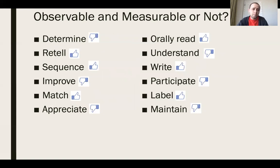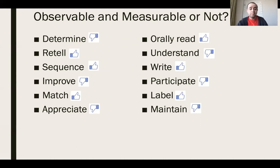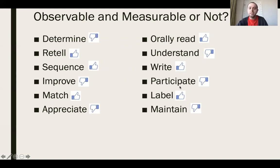Here are examples of observable versus non-observable terms. 'Determine' — thumbs down, can't observe it. 'Retell' — yes, we can observe the student telling us something. Sequencing or putting things in order — observable. 'Improve' — no, we cannot observe improvement; we want that percentage score instead. 'Matching' — observable. 'Appreciate' — no. 'Orally read' — yes. 'Understand' — no. 'Write' and 'participate' — skip participate. 'Label' — great. 'Maintain' — no. Always ensure the behavior can be observed.